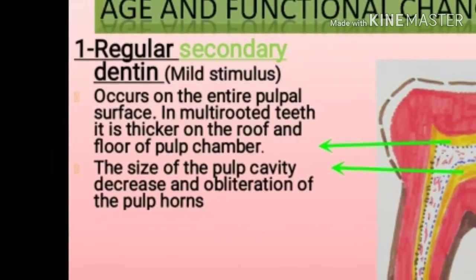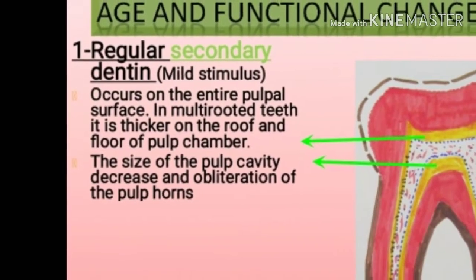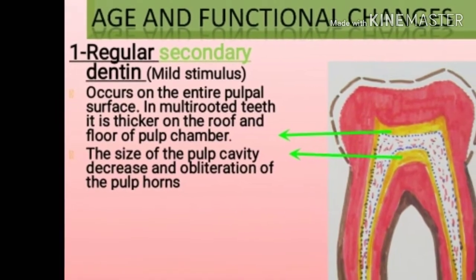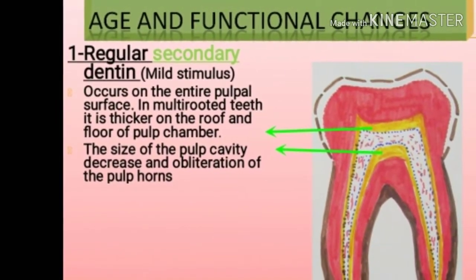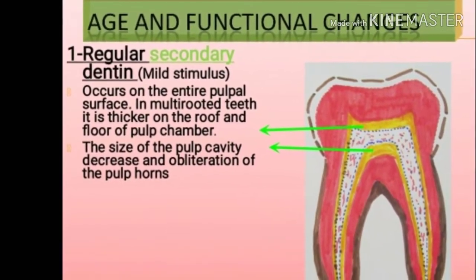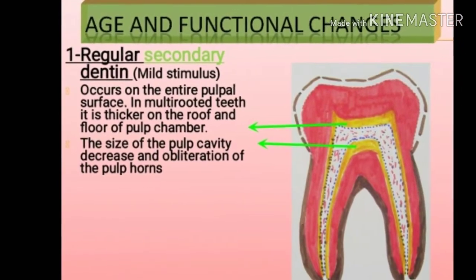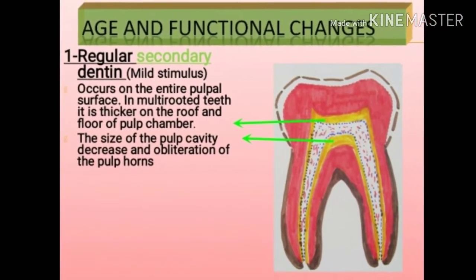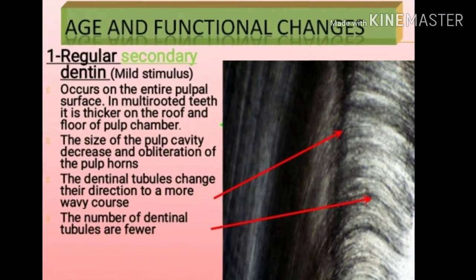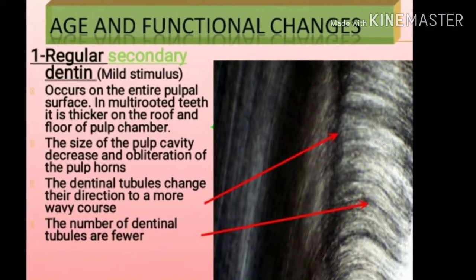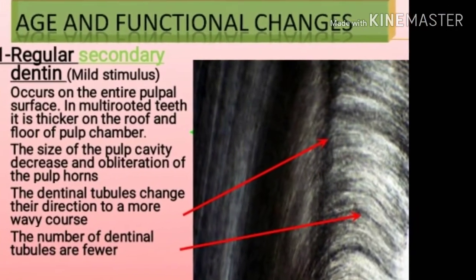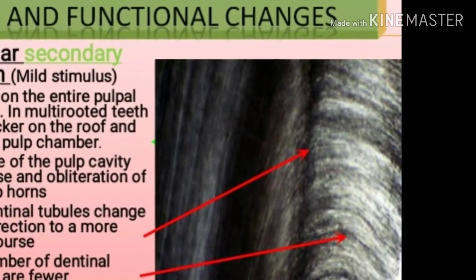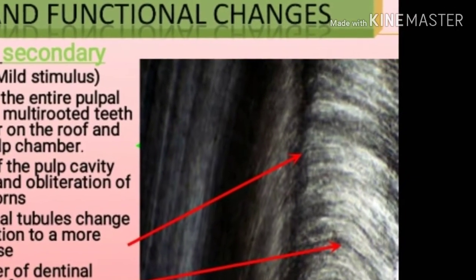Regular secondary dentine is focused on the entire pulpal surface. In multi-rooted teeth, it is thicker on the roof and floor of the pulp chamber. The size of the pulp cavity decreases and there is obliteration of the pulp horns. The dentinal tubules change their direction to a more wavy course and the number of dentinal tubules is fewer. The line of demarcation is dark.